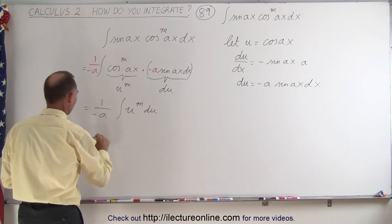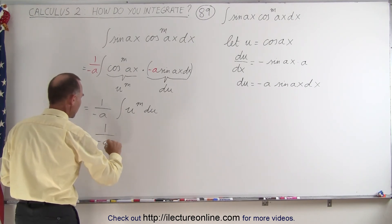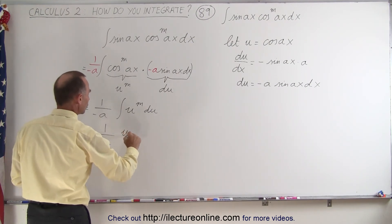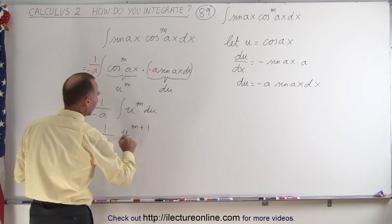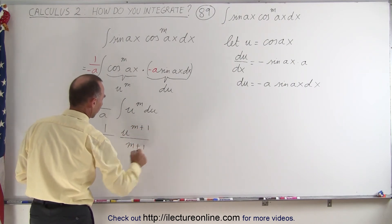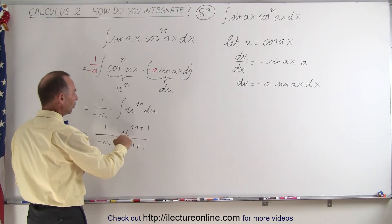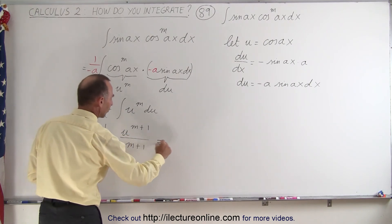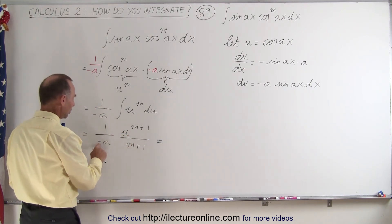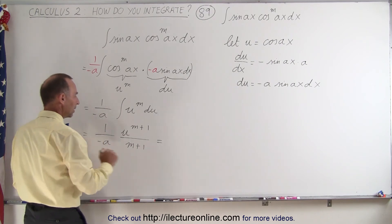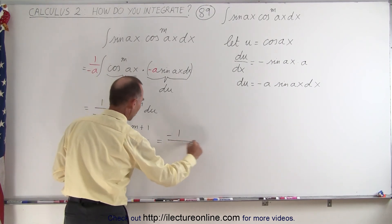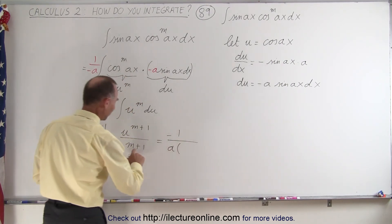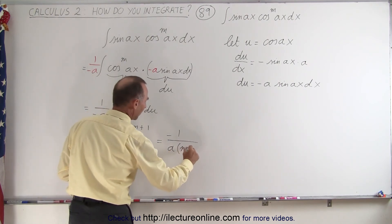So this becomes equal to 1 over minus a, times u to the m plus 1, divided by m plus 1. And then re-substituting what u was equal to, this is going to be equal to—maybe put in the one, the negative put it up here—there'll be minus 1 over a times the denominator m plus 1.